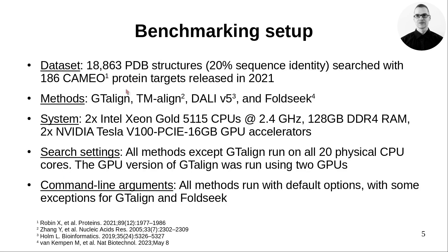To test these methods — GT-Align, TM-Align, DALI, and FoldSeq — PDB structures filtered to 20% sequence identity were used with CAMEO protein targets released in 2021. The test ran on a system with two 10-core CPUs and two NVIDIA GPU cards. All methods were run on all 20 physical CPU cores. GT-Align was configured to run on two GPUs, and all methods were run with default options, with some exceptions for GT-Align and FoldSeq discussed later.